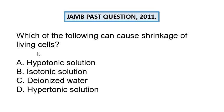For option D, hypo means lesser and iso means equal, so it means the solution surrounding the cell has more concentration than the cell. According to the rule of osmosis, water moves from the region of lesser solute concentration to the region of higher solute concentration. So water is lost by the cell to the surrounding solution because the surrounding solution is more concentrated. Since water is being lost, it leads to shrinkage of the cells — and that is why D is the correct answer.